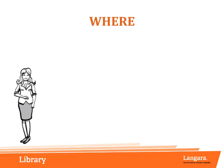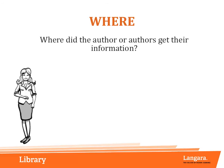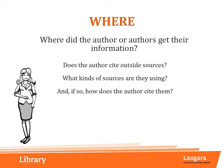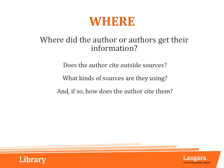The third W in our criteria is for WHERE. When looking at a source, we will ask ourselves the following questions: Where did the author or authors get their information? Does the author use outside sources? What kinds of sources are they using? And if so, how does the author cite them?